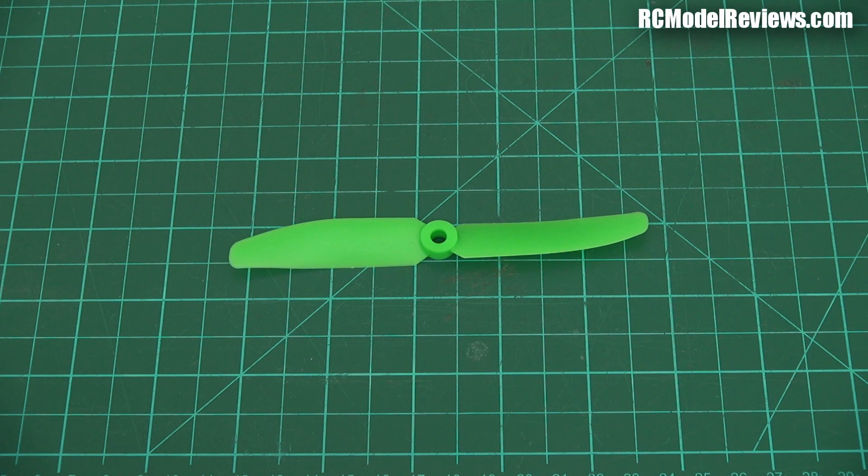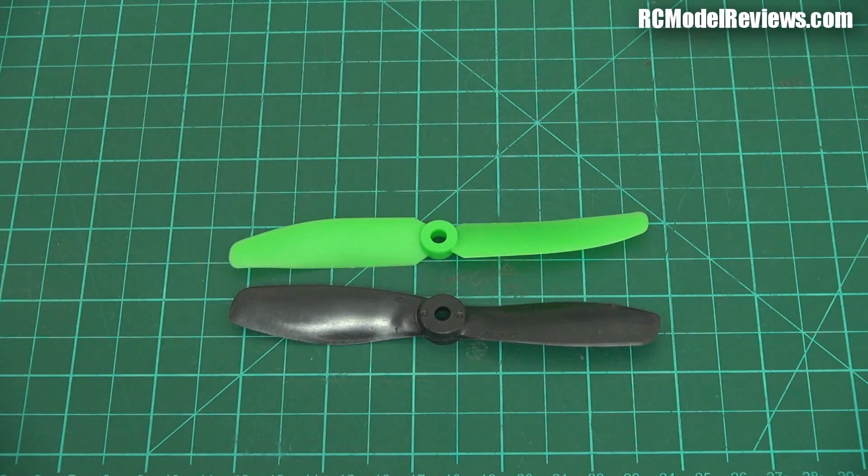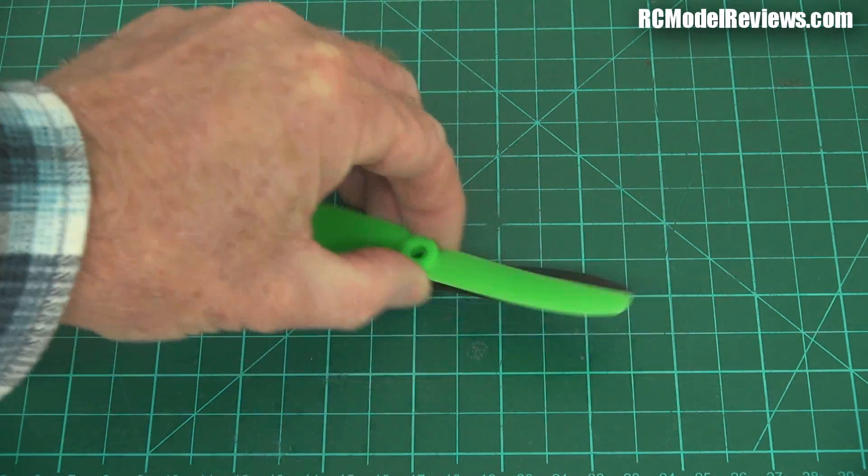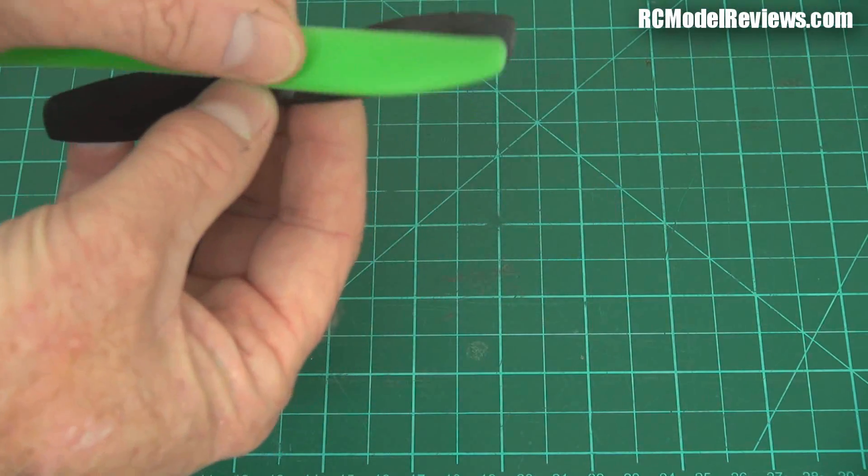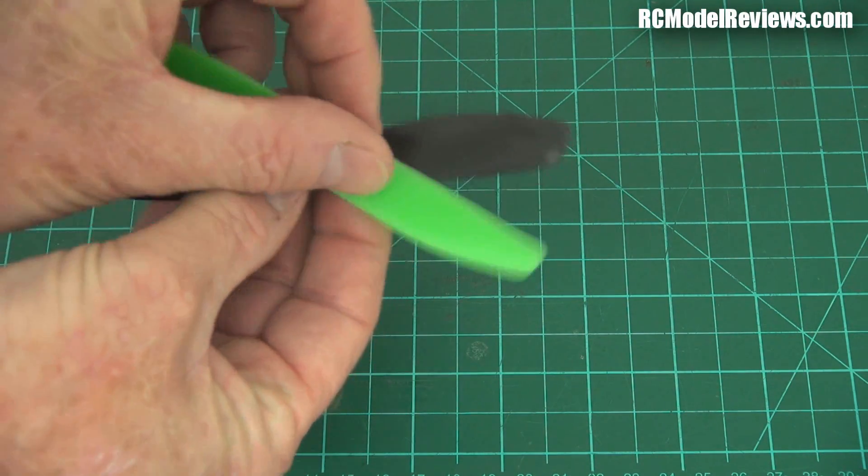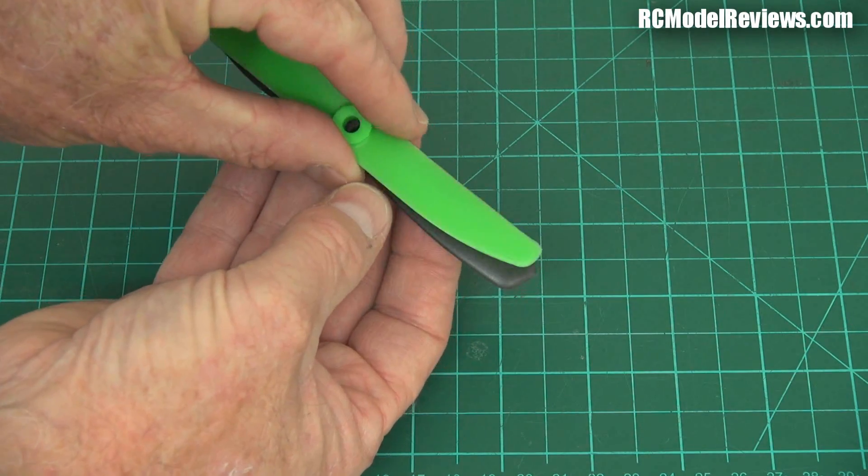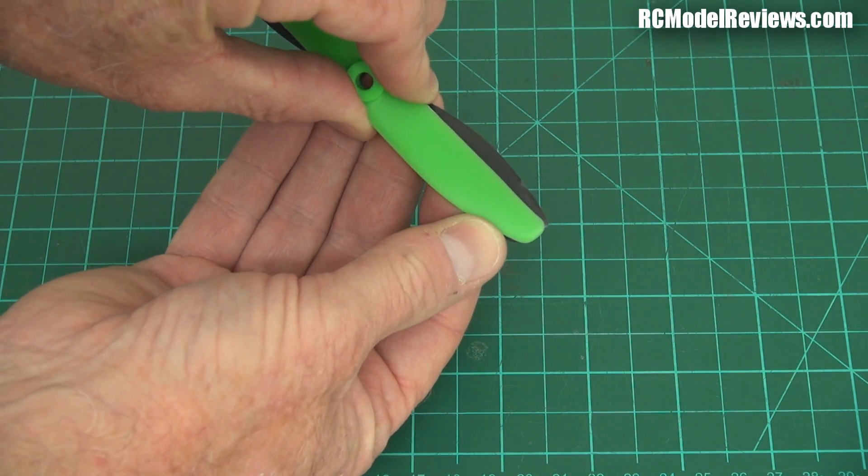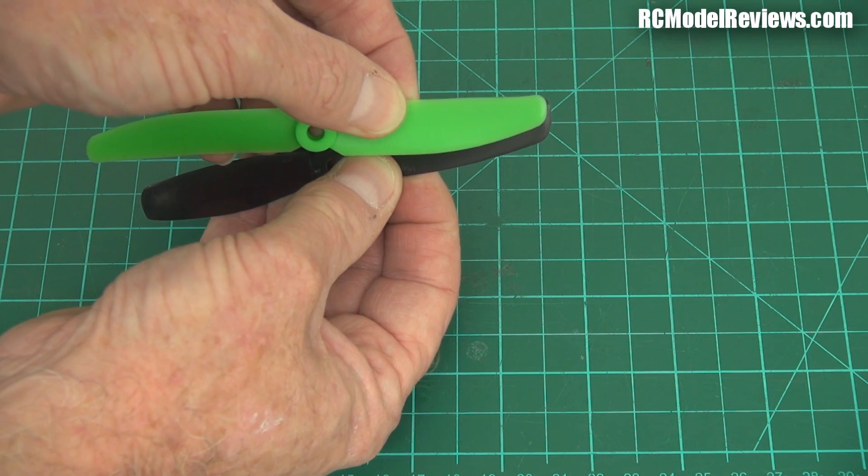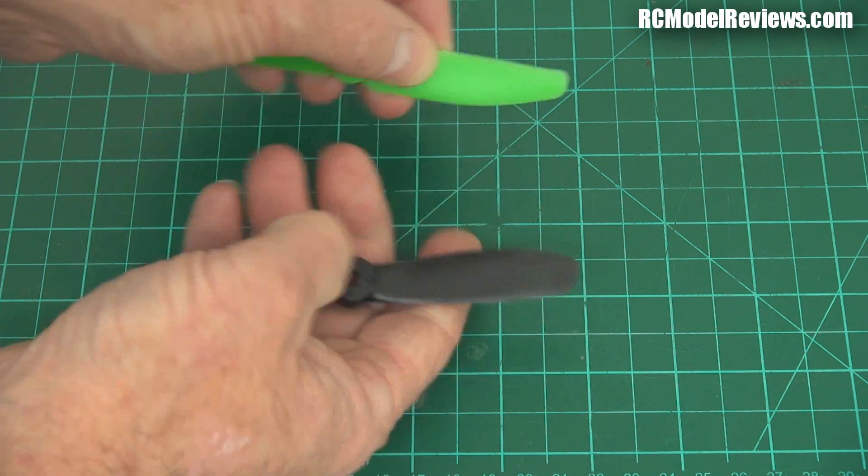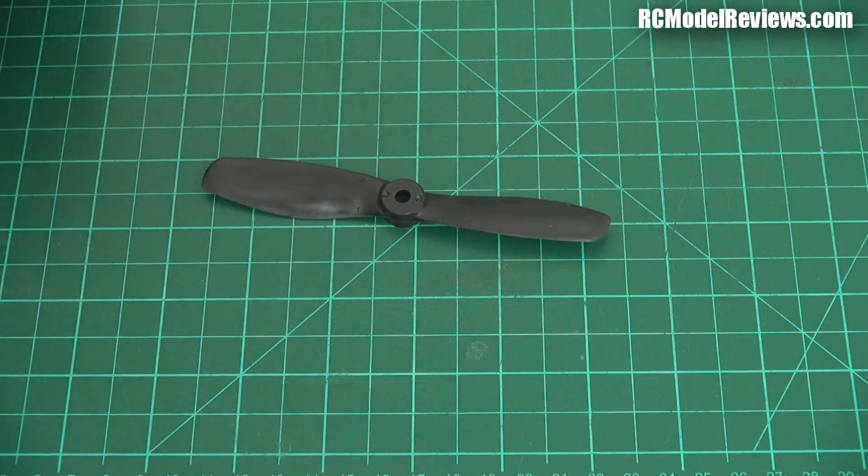And what happened was people wanted to get more power out of their mini quads, more thrust. And to do that, they went to bullnose propellers. This is a bullnose propeller. It's the same diameter, but notice it's got a lot more blade area. If I put one over the other, you can see there's a significant increase in area. And also the tips are wider. You can see that the tip for the bullnose is wider than the tip for the old propeller.